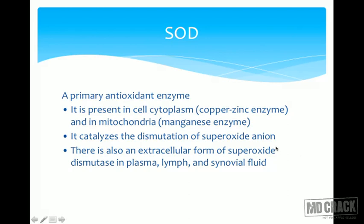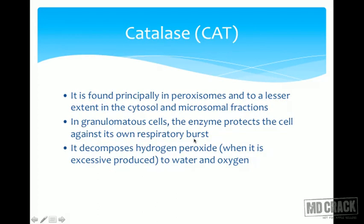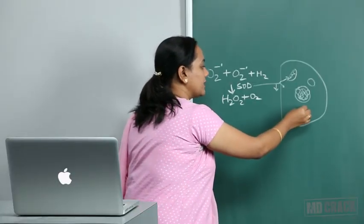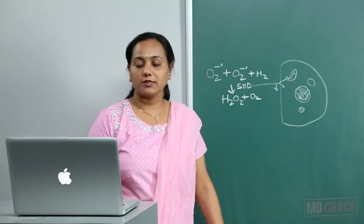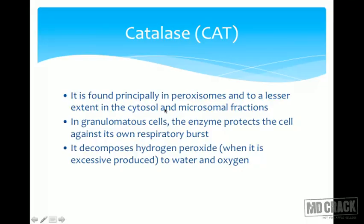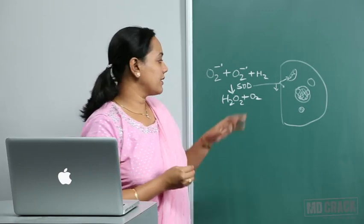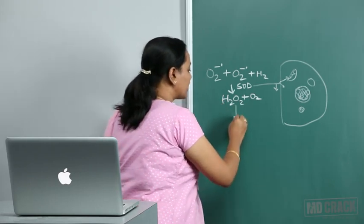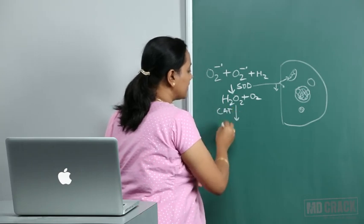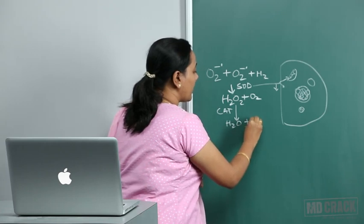SOD requires copper, zinc, or manganese. The next enzymatic antioxidant is catalase, found principally in peroxisomes and to a lesser extent in the cytosol and microsomal fractions. In granulomatous cells like macrophages, catalase protects the cell against its own respiratory burst. During the respiratory burst, hydrogen peroxide is formed, and catalase acts on it, converting it to water and oxygen.